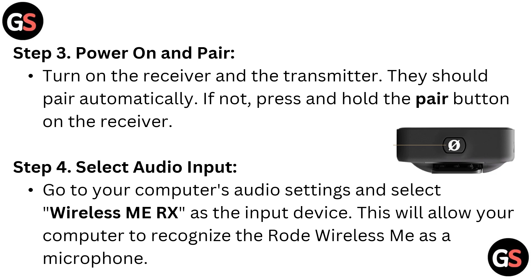Step 4: Select audio input. Go to your computer's audio settings and select Wireless ME RX as the input device. This will allow your computer to recognize the RØDE Wireless ME as a microphone.